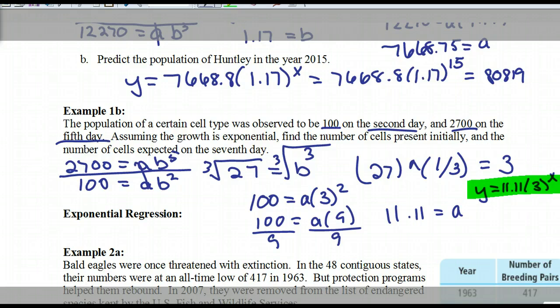So the next question says, what is the number of cells on the seventh day? So we're just going to take this to the seventh power. And I got 24,057. So this really should be 24,027.57 or 0.6. So, 3 to the seventh power, and then times that by 11.11. 24,297.57.